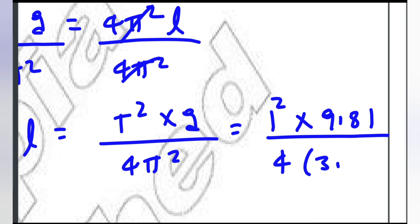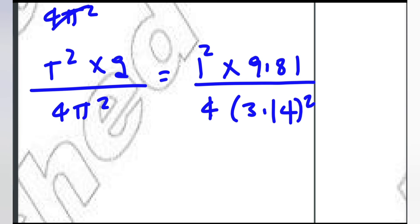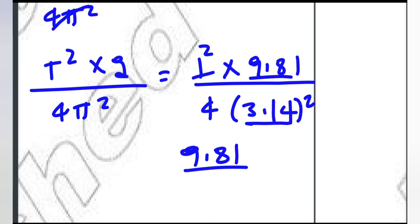L equals 1 squared times 9.81 over 4 times 3.14 squared. With 1 squared equal to 1, this simplifies to 9.81 over 4 times (3.14 squared), giving the required pendulum length.